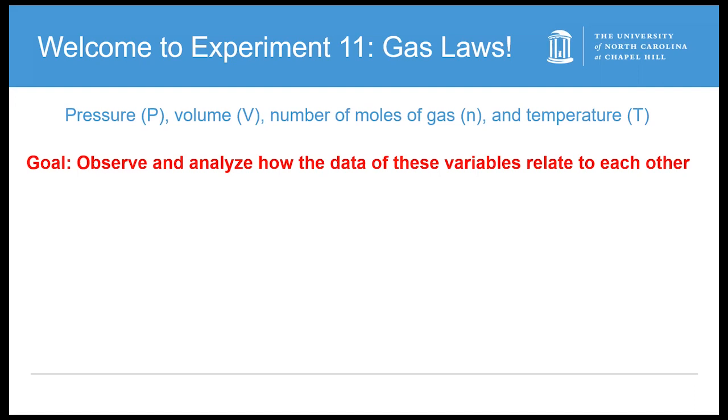Hi and welcome to experiment 11. Today we will understand the variables in the ideal gas law. The four variables are pressure, volume, the number of moles of gas, and temperature.